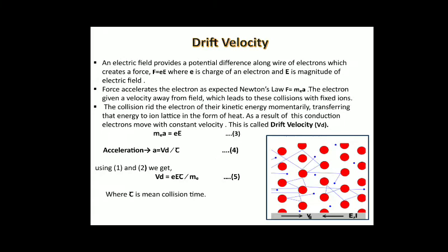An important concept is drift velocity. An electric field provides a potential difference which creates a force F = eE, where e is the charge on the electron and E is the magnitude of the electric field. This force accelerates electrons, so by Newton's law, F = m_e × a. The electrons collide with ion cores in the lattice, transferring their kinetic energy to the ion lattice as heat. As a result, conduction electrons move with a constant velocity called drift velocity, denoted v_d = (e × E × τ) / m_e, where τ is the mean collision time.